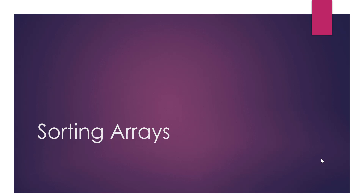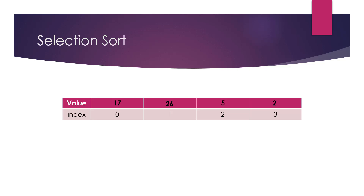In this video, we will see how we can sort our one-dimensional arrays in place using a method called selection sort. In-place means we are not using another array to store the elements; we sort within the same array. For example, if we have an array with elements 17, 26, 5, and 2, sorting it in ascending order gives us 2, 5, 17, 26 — starting with the smallest and ending with the largest.